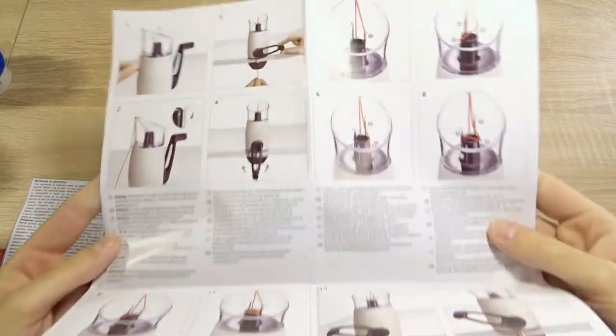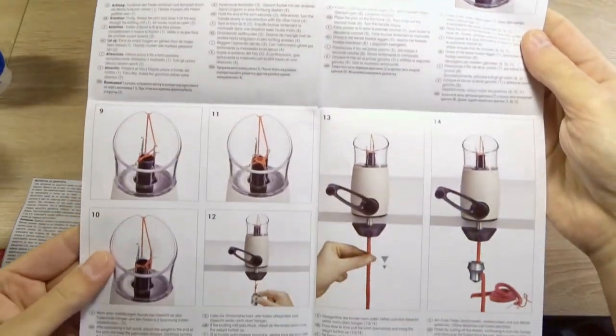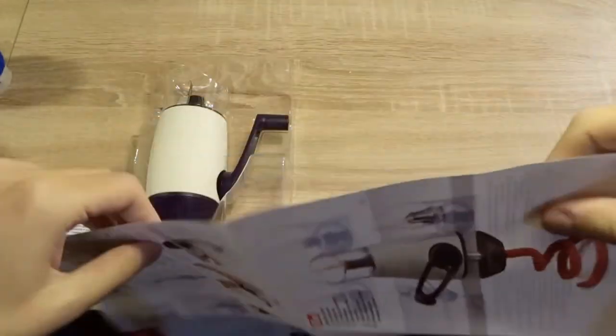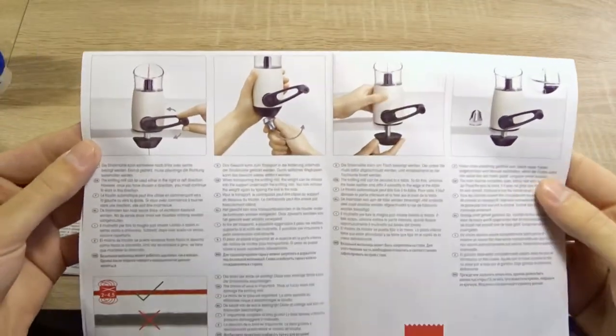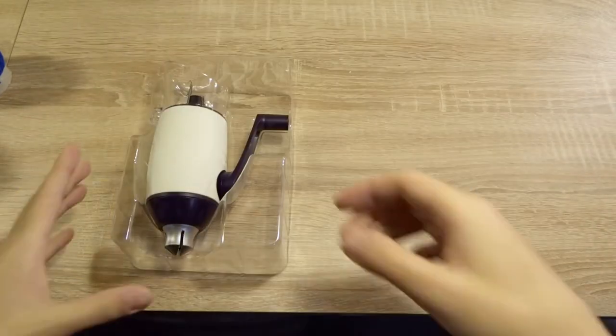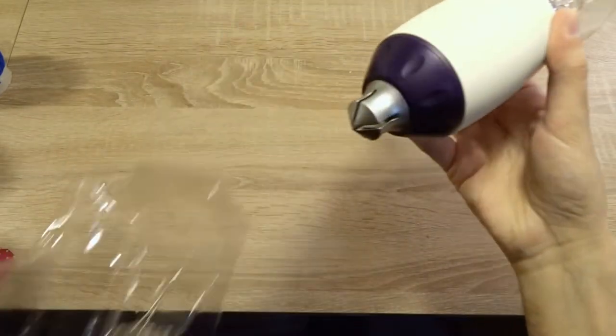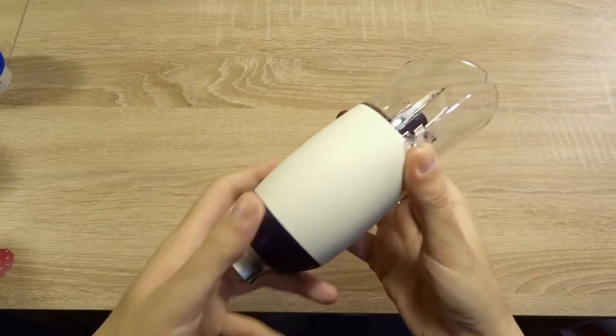Everything is explained in detail. This is the knitting mill. It's small and compact.